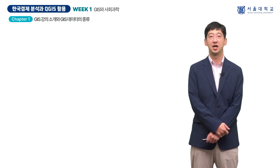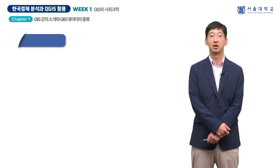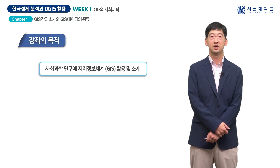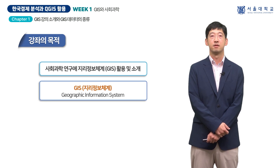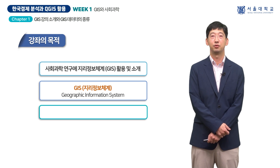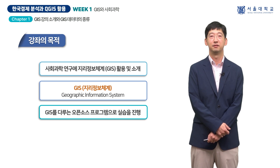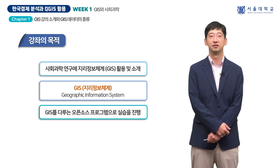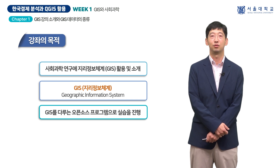이번 시간은 첫 번째 강의로 GIS와 사회과학이라는 주제로 진행하겠습니다. 본 강좌의 목적은 사회과학연구에서 지리정보체계 GIS를 구체적으로 어떻게 활용할 수 있는지 소개하고 실제 GIS 소프트웨어로 실습을 진행하는 것입니다. GIS는 Geographic Information System의 줄임말로, 여러분이 다양한 GIS 데이터를 직접 처리하여 연구에 이용할 수 있도록 하고자 합니다.